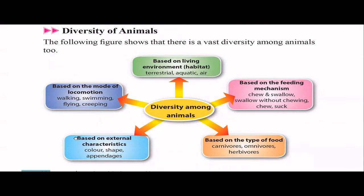Animals also differ based on external characteristics — from the outside we can identify differences in color, shape, and appendages. For example, humans have legs to walk, fish have fins to swim, and birds have wings to fly. Based on locomotion — moving the whole body from one place to another — humans, dogs, and cats walk or run; fish swim; birds fly; and snakes and other reptiles creep.